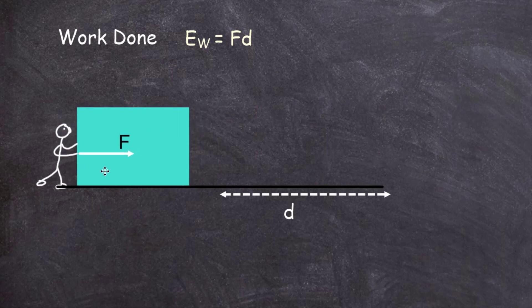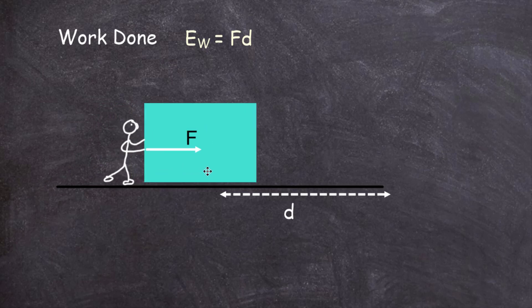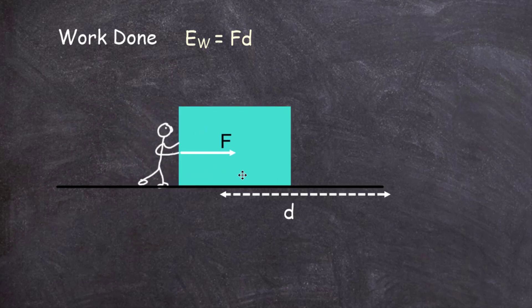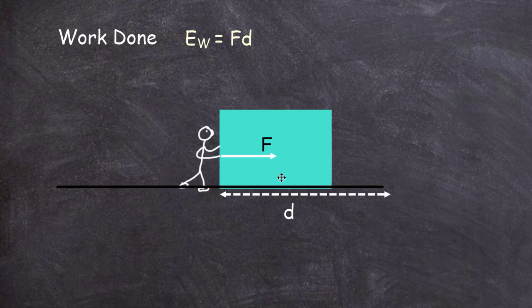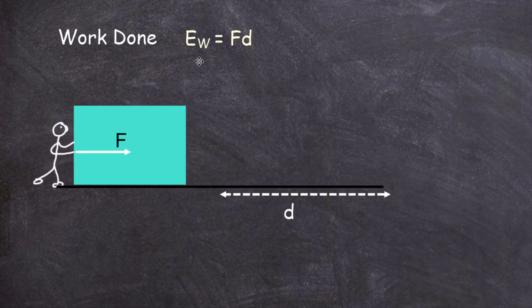Now we want to find out what that energy is — it's kinetic energy. After all, when the force starts to move the block, the block is moving, therefore it has movement energy, and that's what we call kinetic energy. So we have to find a way of changing EW equals F times D into a formula which gives us the kinetic energy of a moving object.